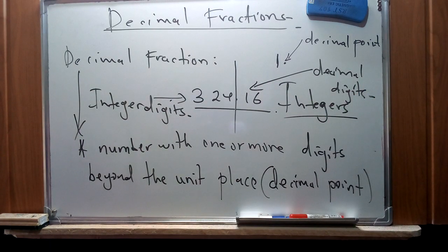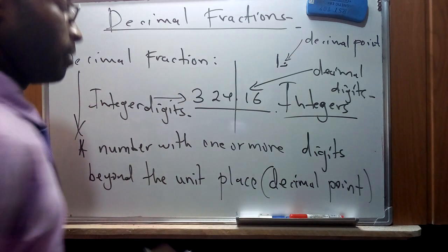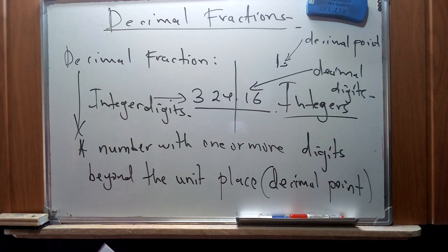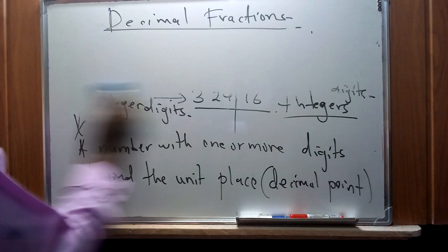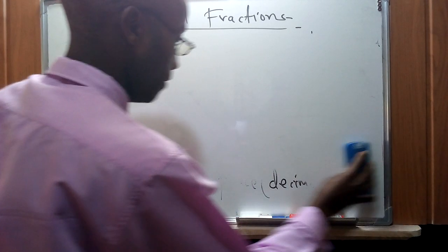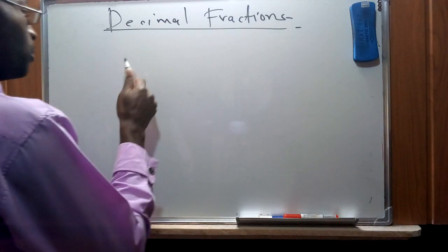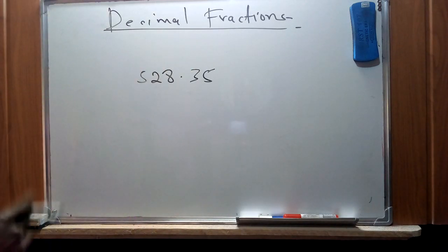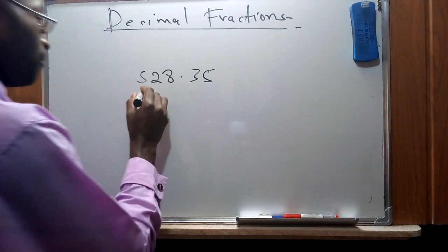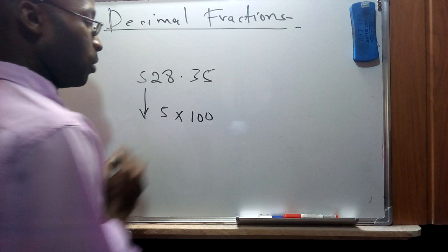The integer digits are separated from the decimal digits by the decimal point. These numbers are based on the number 10. For example, if we have a number like 528.35, in trying to figure out its value as a decimal fraction, we see that 5 represents a quantity that is a product of 500, and 2 represents a quantity in the tens.